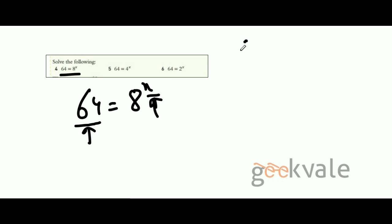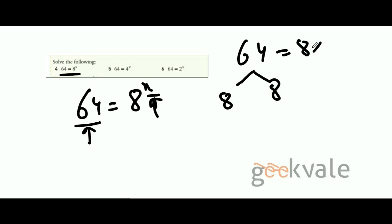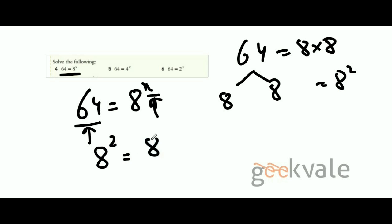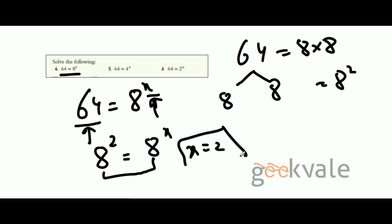How to do that? Draw a factor pair for 64 — the left leg should be 8, and the right leg the other factor. 8 times what is 64? 8. So we get two 8s, meaning 64 is 8 times 8, or 8 squared. So 8 squared equals 8 to the power of x. Bases are the same, so x equals 2. Simple as that.